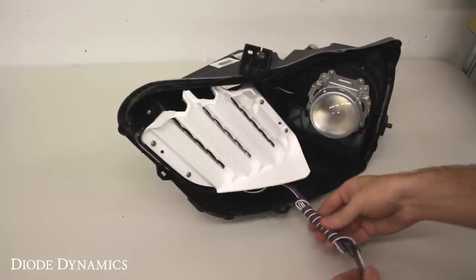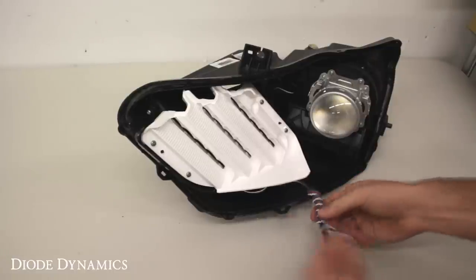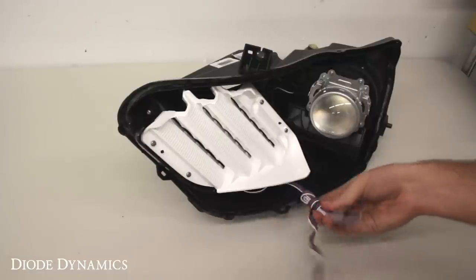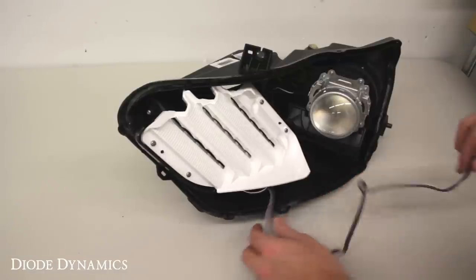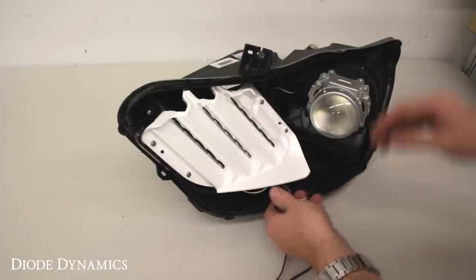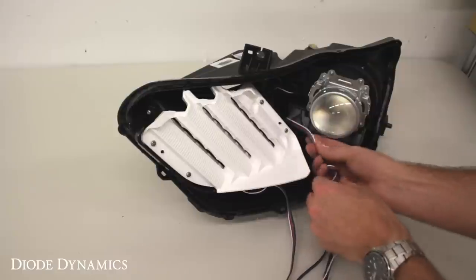Once everything is installed in place, make sure to unwrap and run your wiring outside the headlight. Now if you'd like, you can drill a hole in the back of the headlights. Or just run it through an existing hole or dust cap. Of course, anything you create, you'll want to seal to make sure there's no moisture in the headlight when you're all set and done.